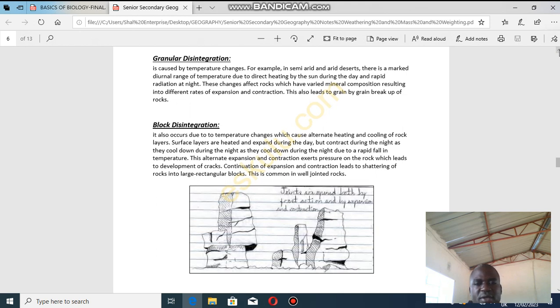This alternate expansion and contraction places pressure on the rock which leads to development of cracks. Continuation of expansion and contraction leads to shattering of rocks into large rectangular blocks. This is common in well-jointed rocks.